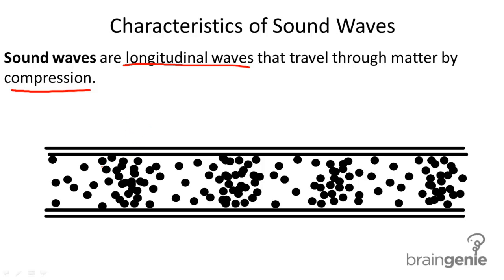So the regions where the molecules become compressed, we call this compressions. And then areas where the molecules are more spread out and they're not as dense, or what we call rarefactions.